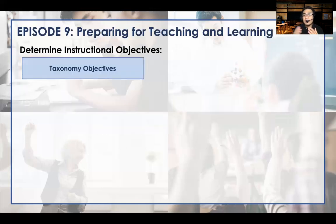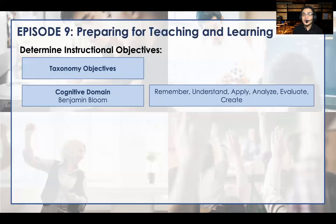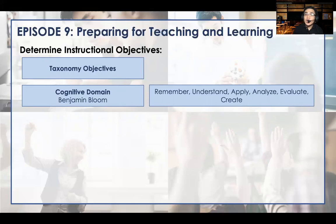In preparing for teaching and learning, number one that you should always remember is to review your objective writing. In your objective writing, always consider three domains. First is the cognitive domain — it is highly recommended to consider Bloom's Taxonomy: remembering, understanding, applying, analyzing, evaluating, and creating. Creation was moved above evaluation because it is actually a higher form of learning — you are already translating what you've learned into a new idea. Each of these categories has recommended words and activities to be used.